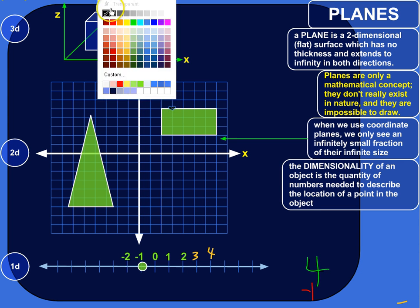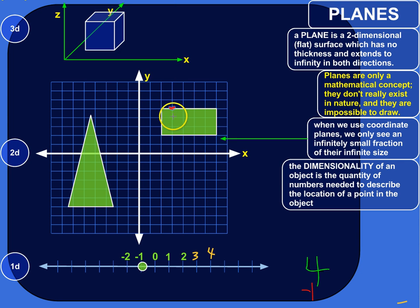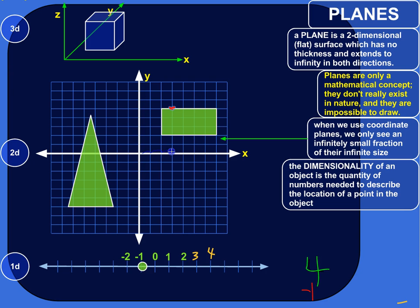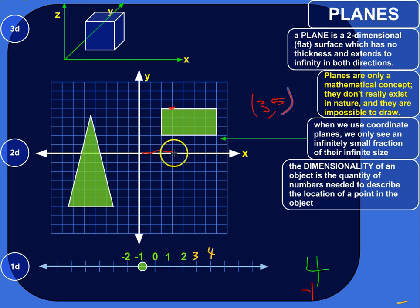Let's look at a point here. How many numbers do I need to describe where this point is in this shape? On the x-axis it goes 1, 2, 3 — so my x-coordinate is 3. And then y would be 1, 2, 3, 4, 5. So to describe the location of this point in the rectangle, I need two numbers: its x-coordinate is 3 and its y-coordinate is 5.